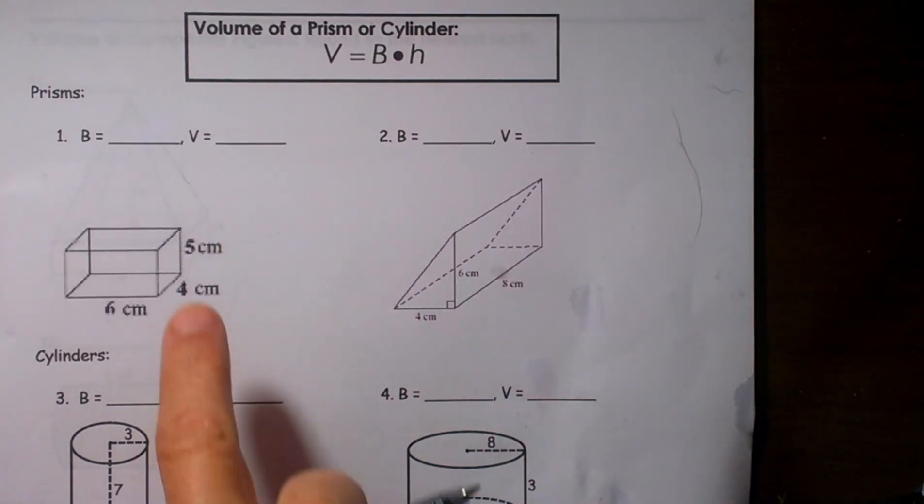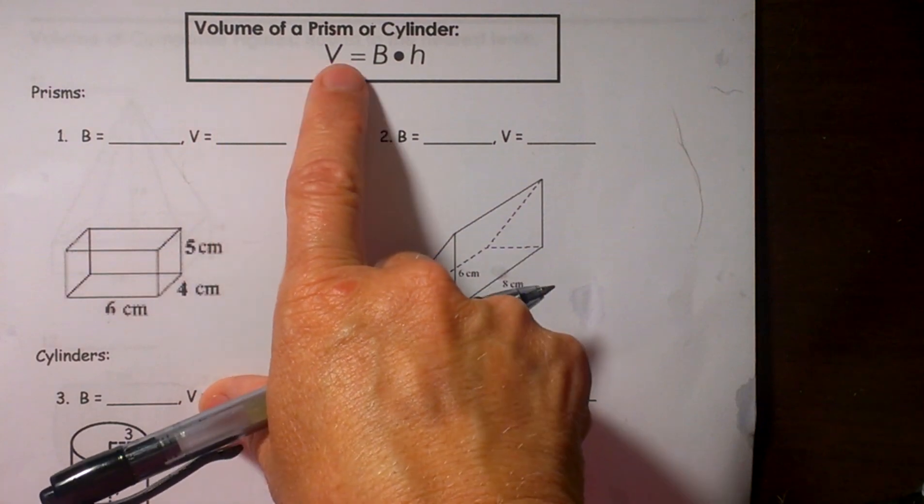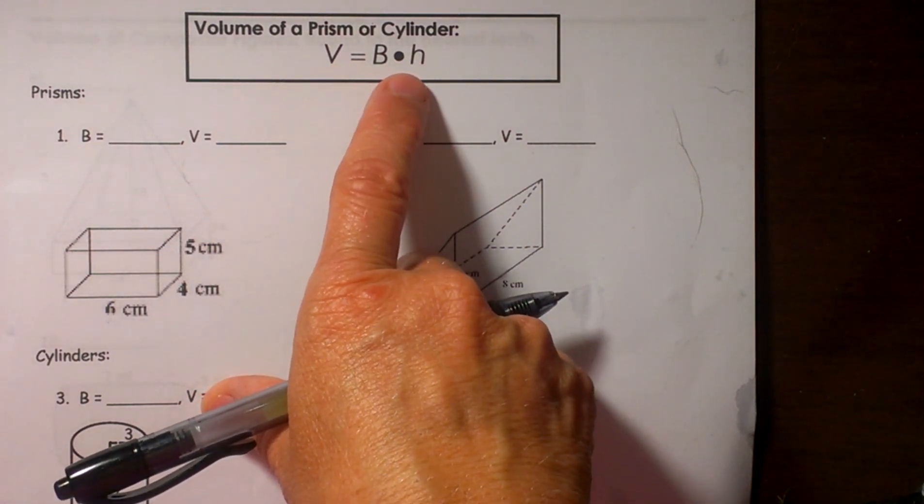Welcome to Moo Moo Math today. We are going to look at the volume of prisms and cylinders. So here is our volume formula. It is equal to the base area times the height.